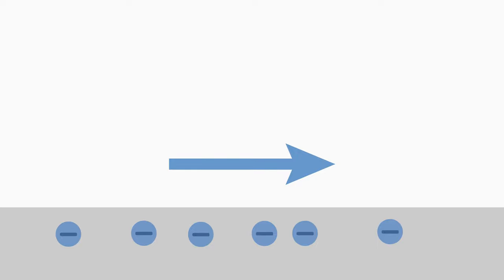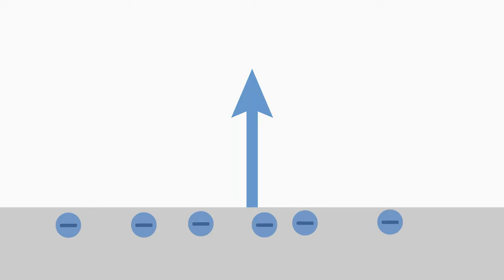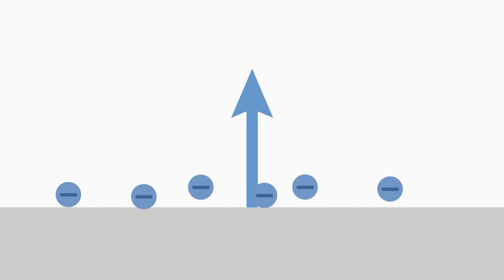Charges near the surface of the conductor are called surface charges. The surface charges can move freely along the conductor surface, that is, parallel to it. In contrast, surface charges cannot move perpendicular to the conductor surface. If they could, they would leave the surface, and the conductor would no longer be charged and would therefore not generate an electric field at all.